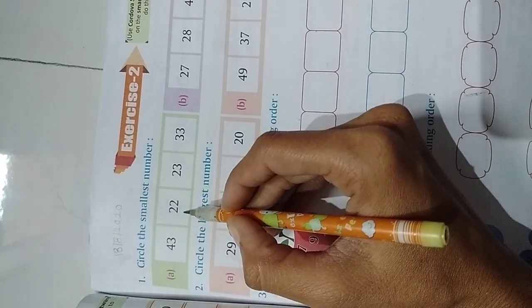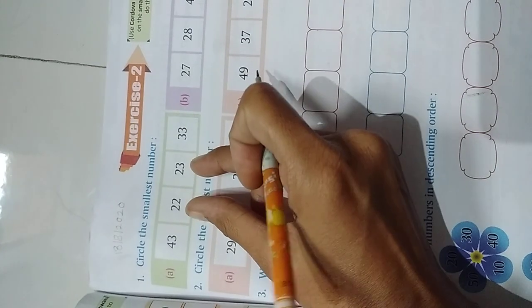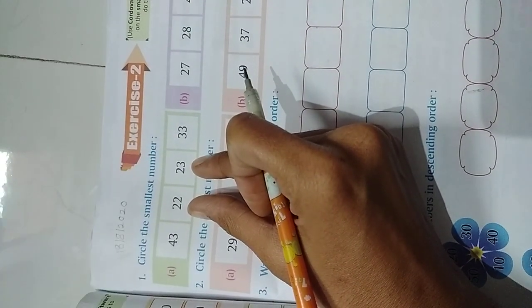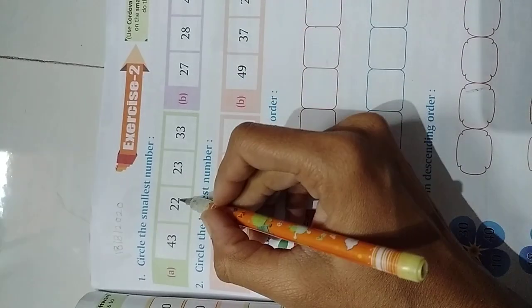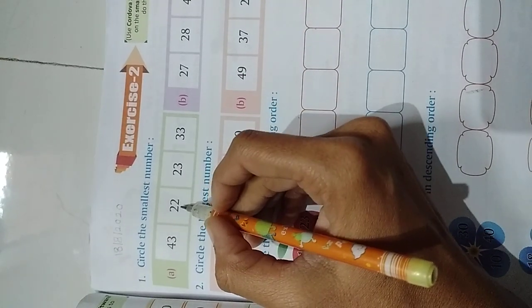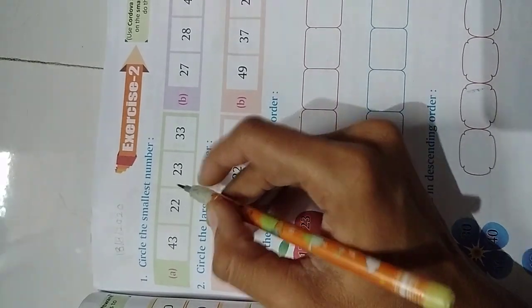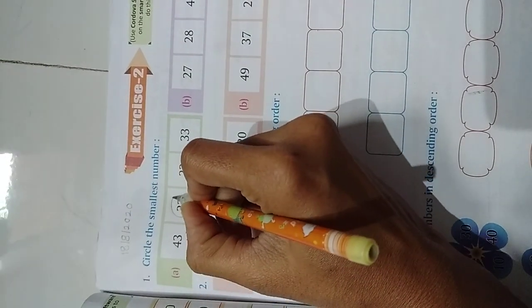Then which one is small? 2 right. But there are two numbers. Now we need to see on 1s place. Which number is small here? 2 or 3? Right. 2. That means here 22 is the smallest number. We need to circle it using our pencil.